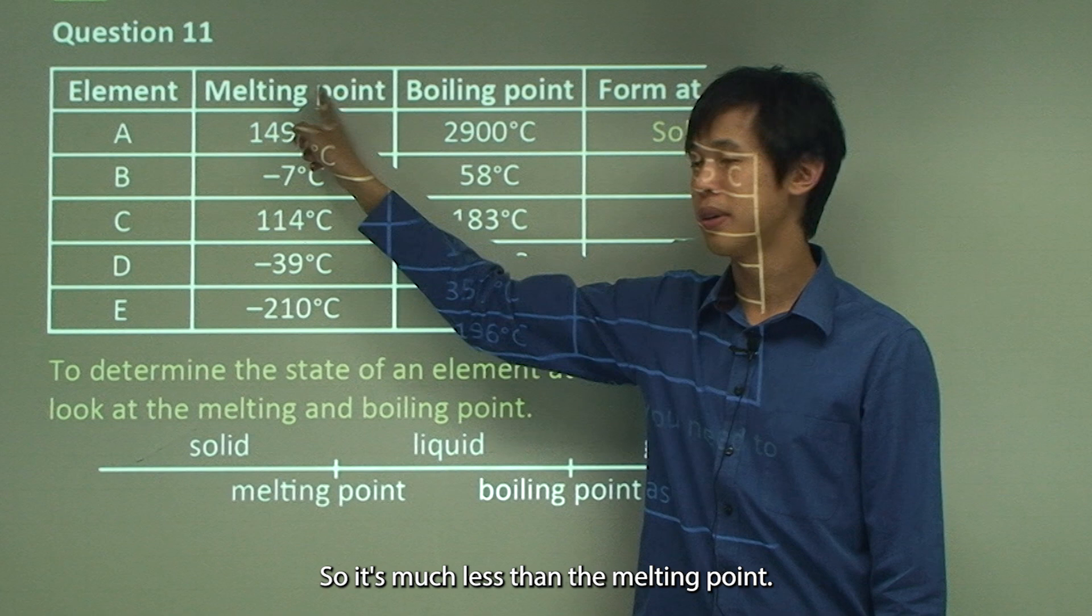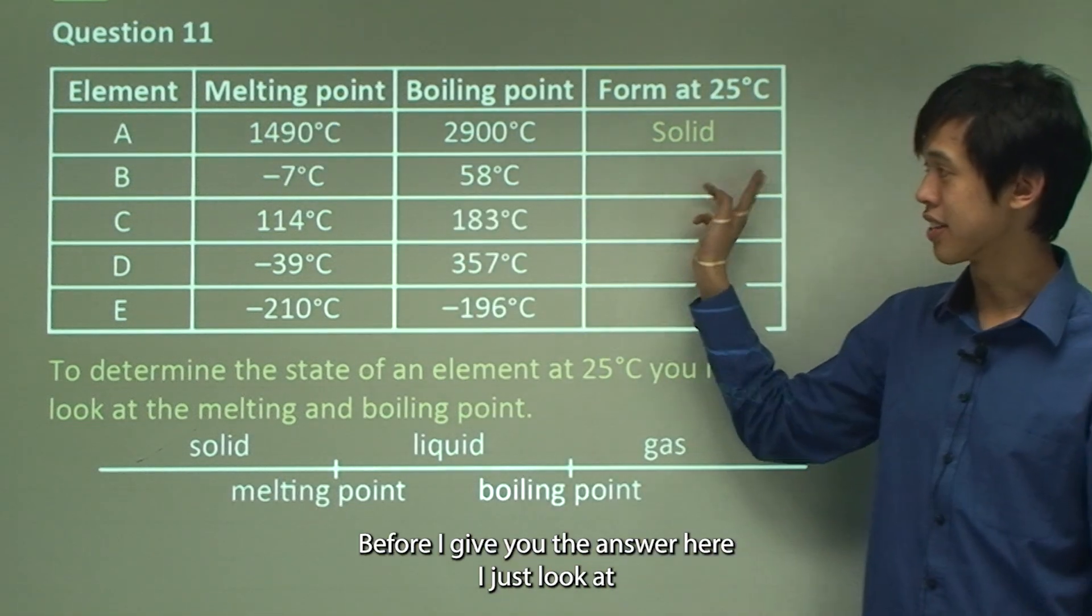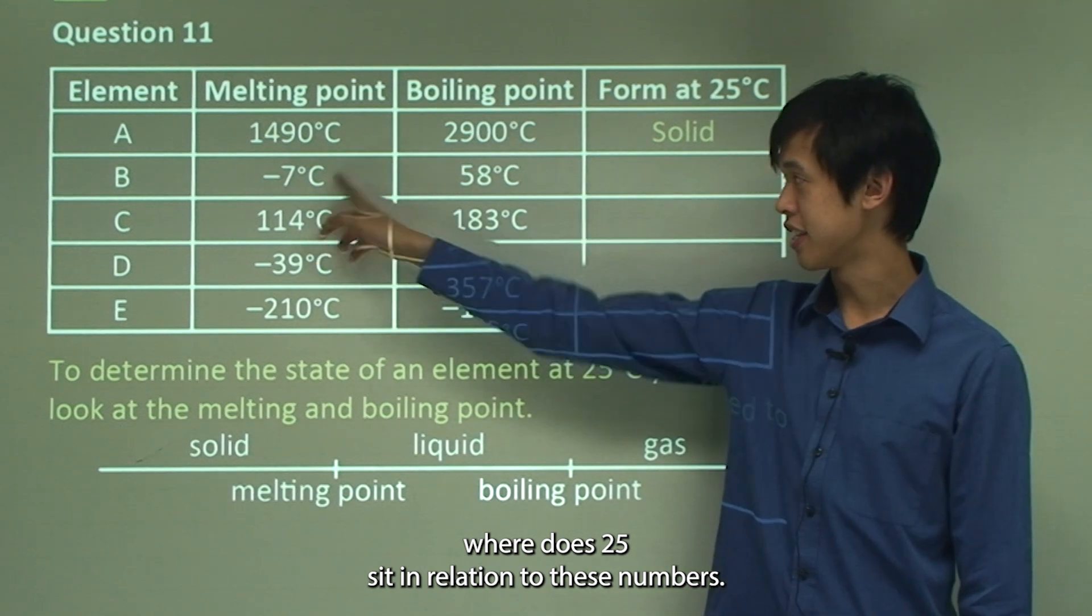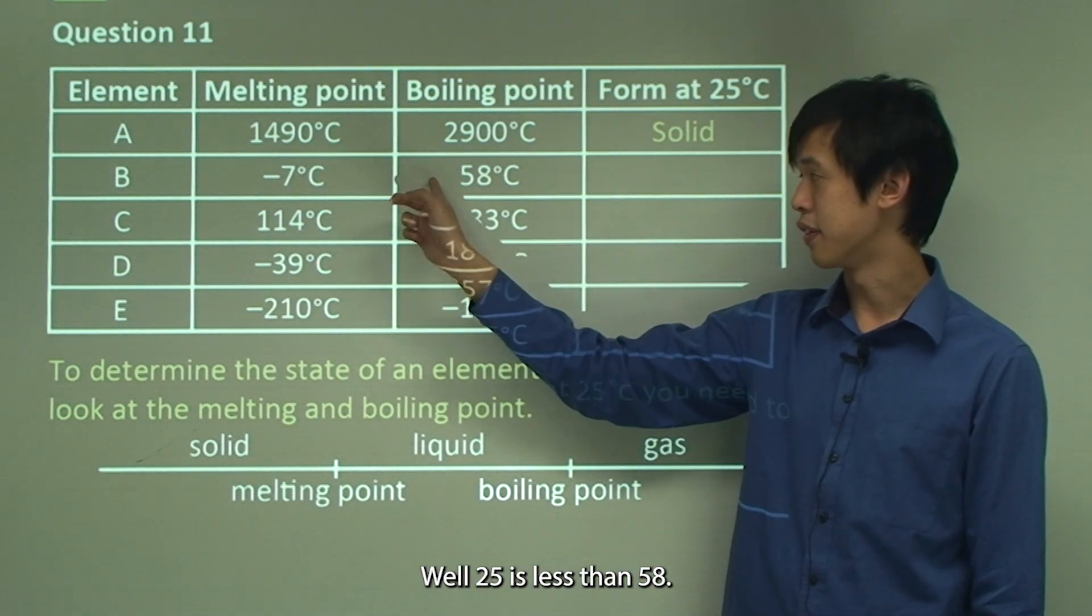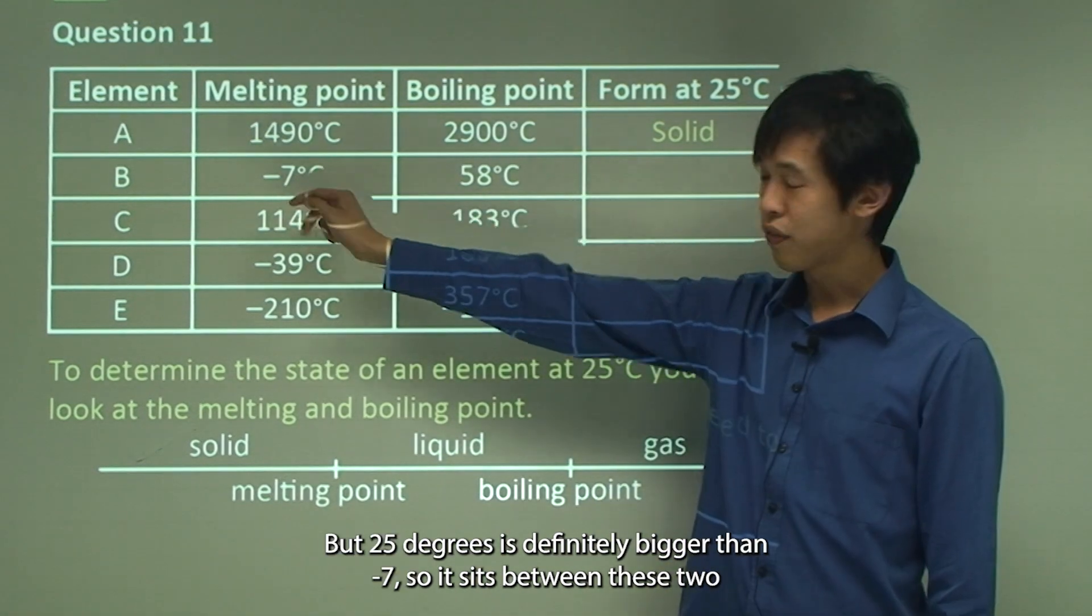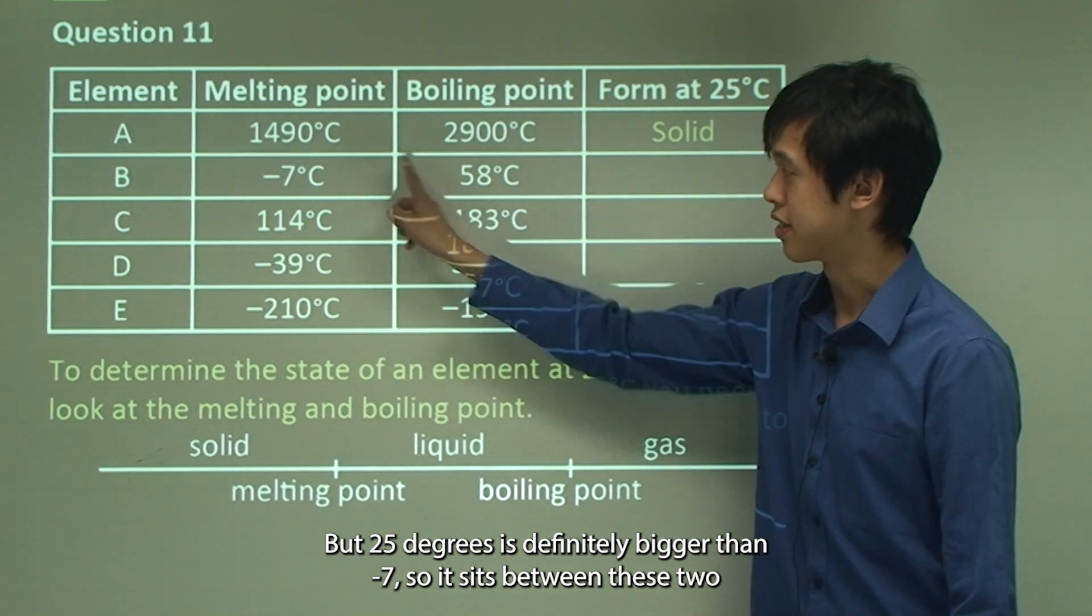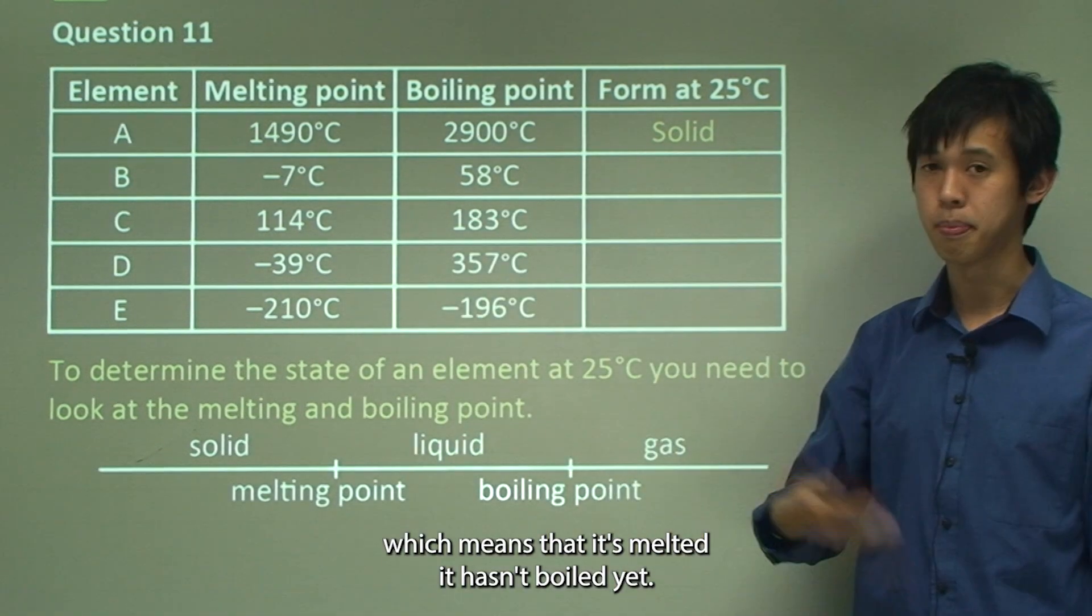Before I give you the answer here just look at where does 25 sit in relation to these numbers. Well, 25 is less than 58 so it could be a liquid or it could be a solid, we don't know yet. But 25 degrees is definitely bigger than minus 7, so it sits between these two which means that it's melted but it hasn't boiled yet.